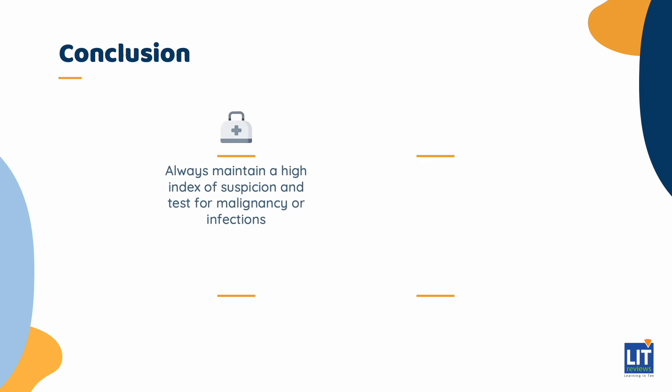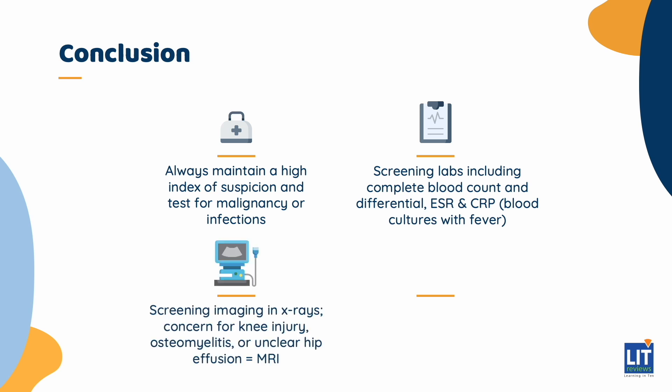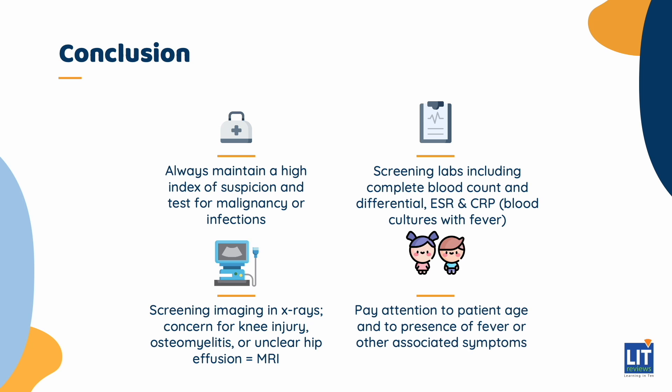In summary, and in thinking about little Timmy, you always want to maintain a high index of suspicion and test for malignancy or infections. With any kid presenting with a new limp, obtain screening labs including a complete blood count and differential, a SED rate, a CRP, and if you measure or hear a history of fever within the last 48 hours, obtain blood cultures as well. Obtain screening imaging, usually x-rays, unless you have concern for a knee injury, osteomyelitis, or an unclear hip effusion, in which case MRI can be extremely useful. Pay close attention to the patient's age and presence of fever or other associated symptoms, as they can guide your diagnosis. For Timmy, both his age and the history of a week's worth of upper respiratory symptoms might point you towards post-infectious synovitis of the hip.